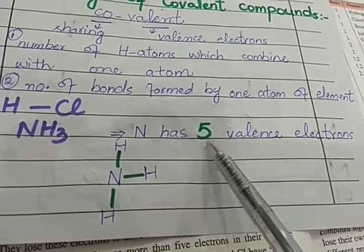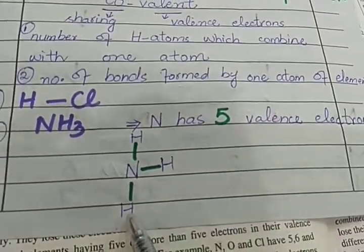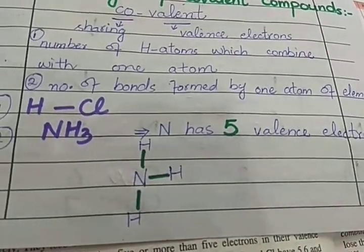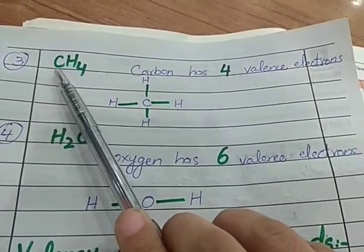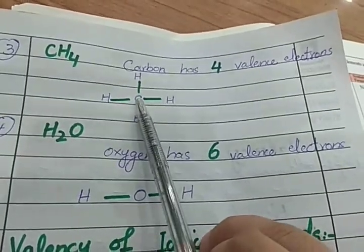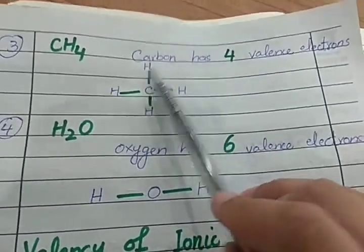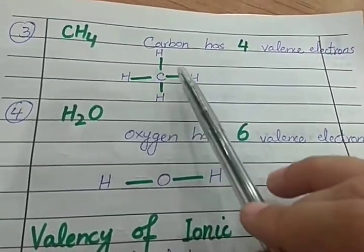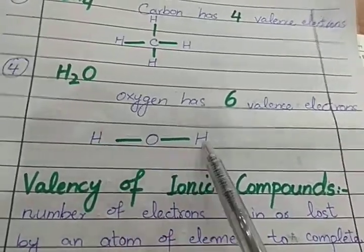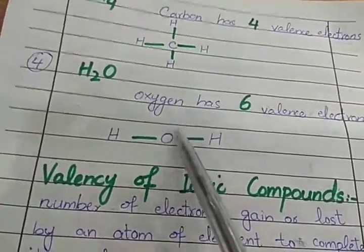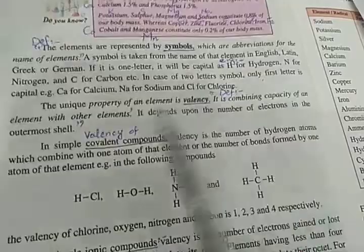Nitrogen's valence shell has 5 electrons; it needs 3 more to complete the octet (5+3=8), so it attaches 3 hydrogen atoms with 3 bonds — valency is 3. In CH4, Carbon is the central atom with 4 hydrogen atoms attached, so Carbon's valency is 4. Carbon's valence shell has 4 electrons, needing 4 more to make 8. In H2O, Oxygen has 2 hydrogen atoms attached, forming 2 bonds — valency is 2.